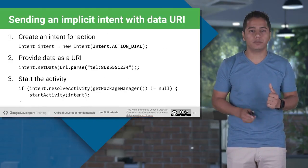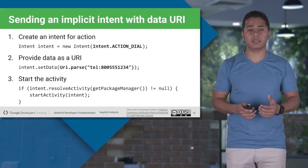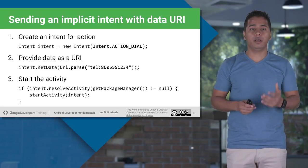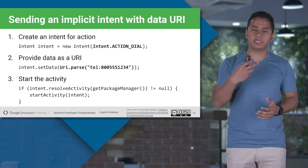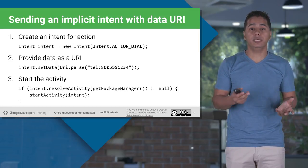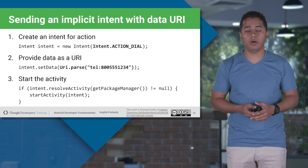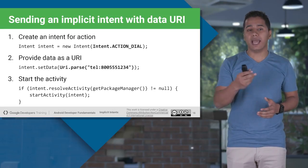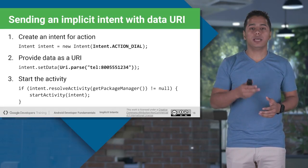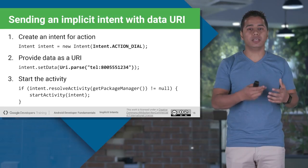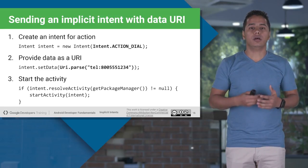To parse data along with your implicit intent, you again define an action and use Intent.setData with a data URI. For example, for a dial action, the data URI would be URI.parse with 'tel:' and the phone number. To connect to a website, use URI.parse with 'http:' and the website link. Again, before executing, check if the appropriate application is present in the Android device, and only then fire the intent.